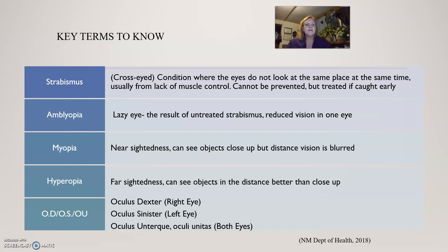Myopia is our term for nearsightedness. Hyperopia is farsightedness. OD, oculus dexter, is how we chart the right eye. OS, oculus sinister, is how we chart the left eye. And OU is both eyes. A helpful way to remember that OS is for the left is that southpaws are lefties.